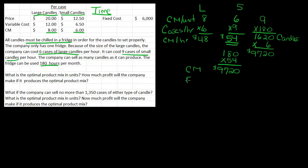My fixed cost is $6,000. So my profit is $3,720.